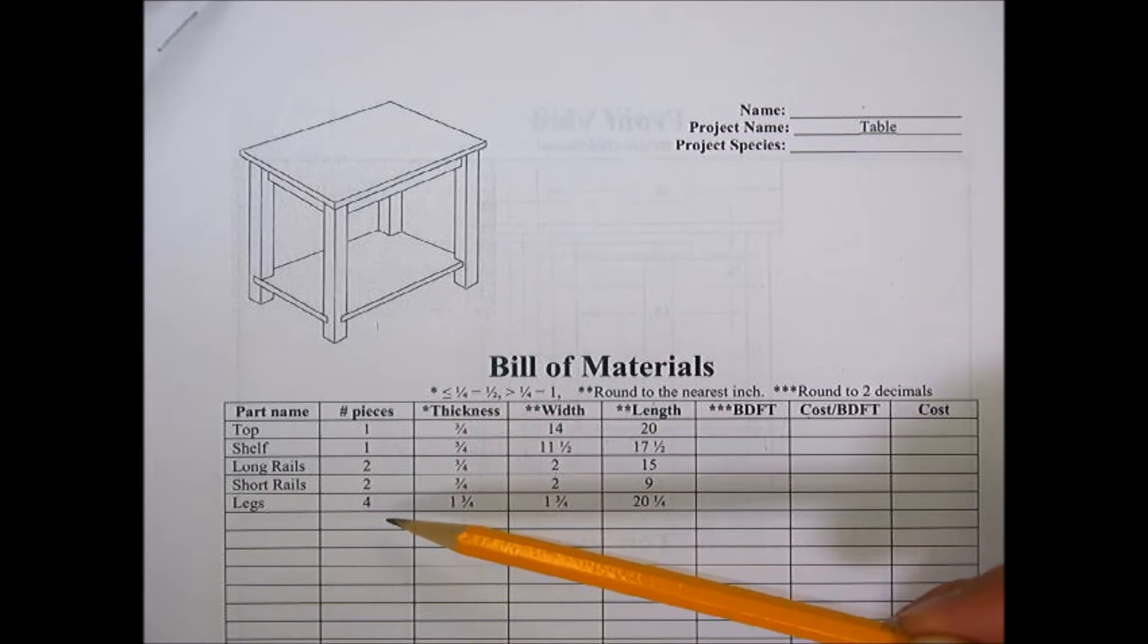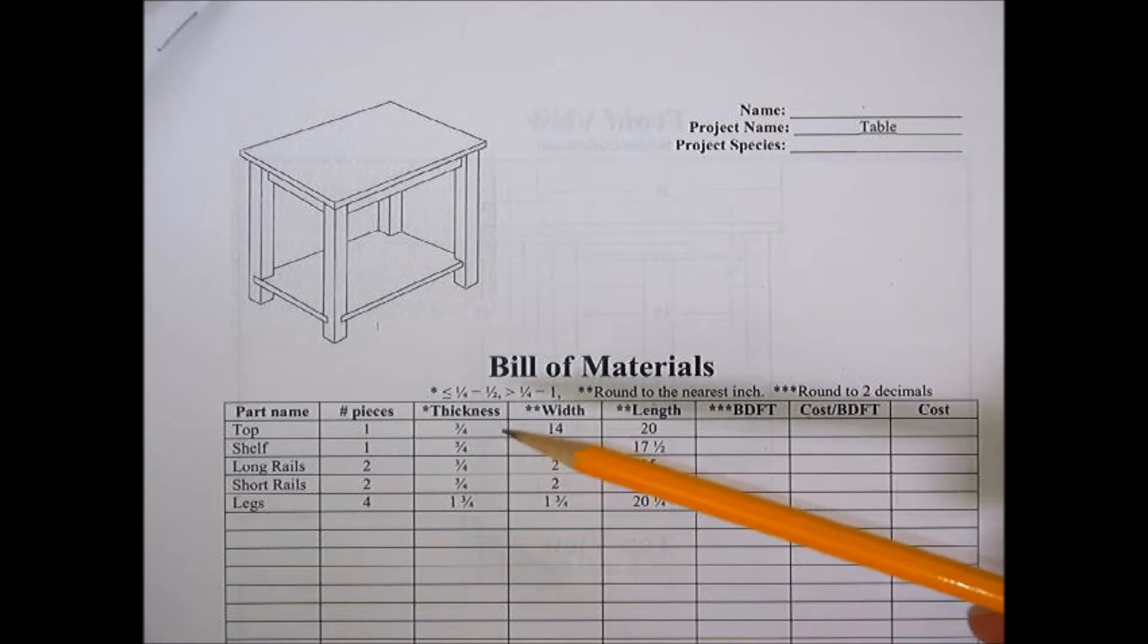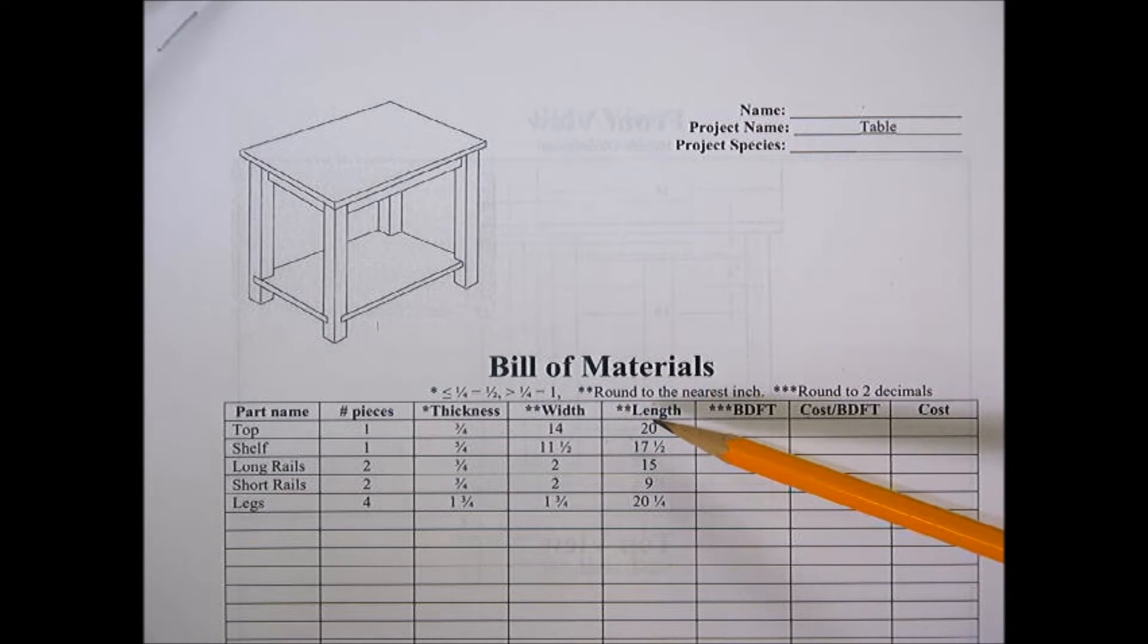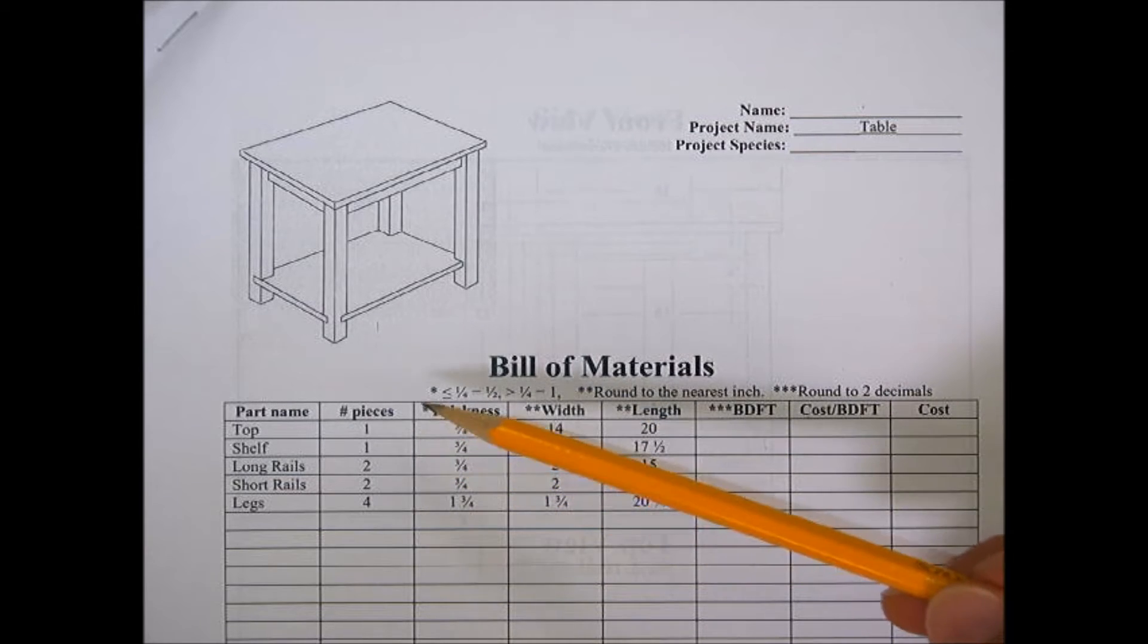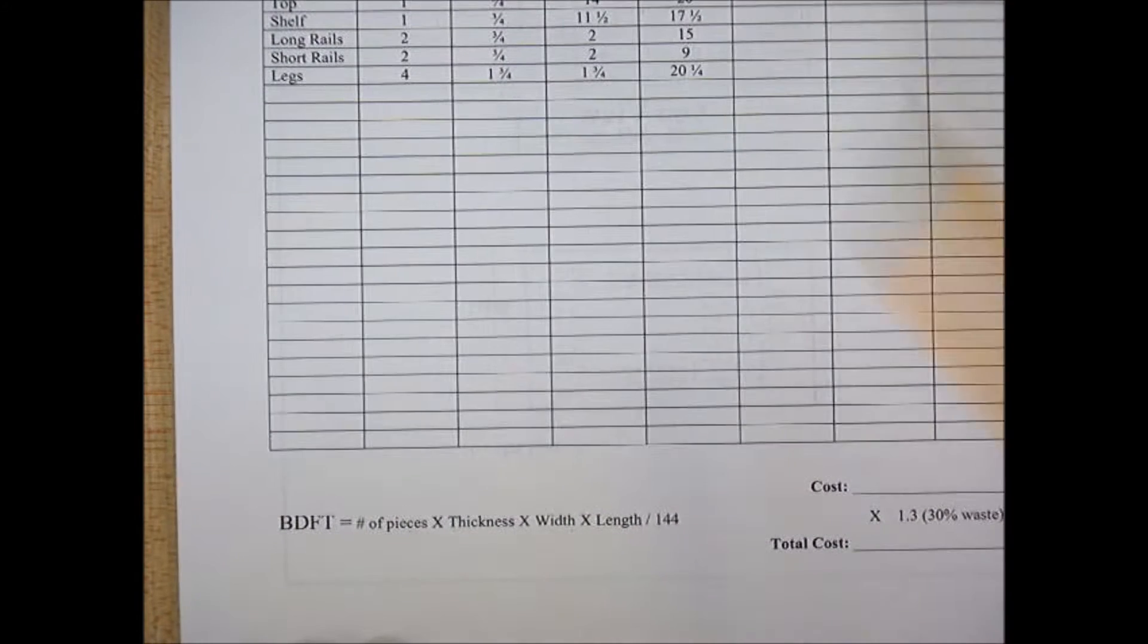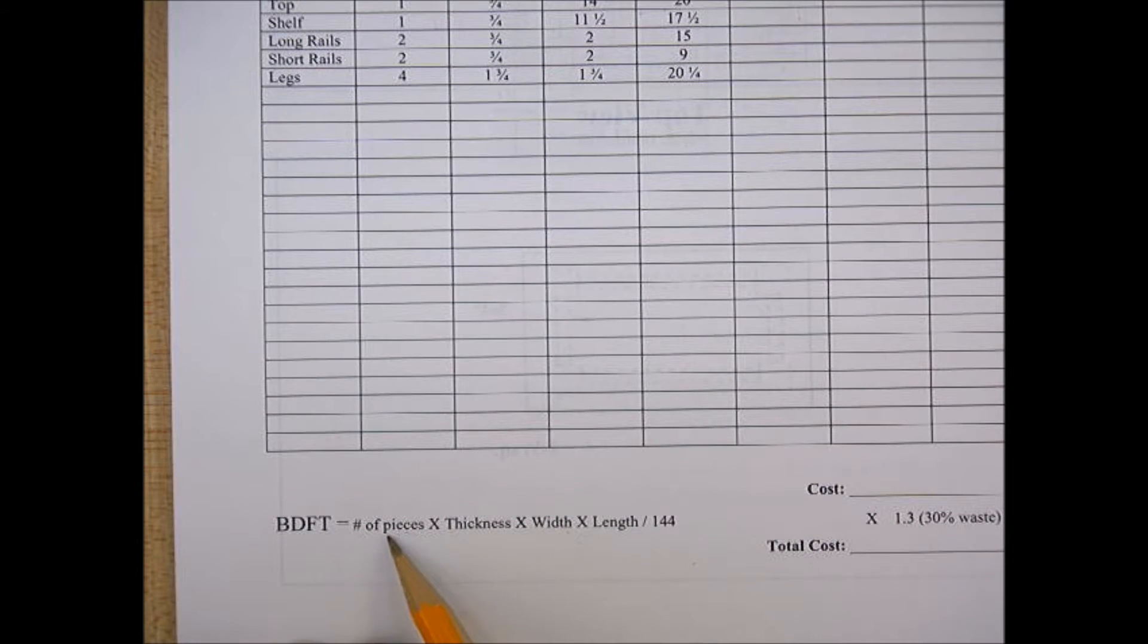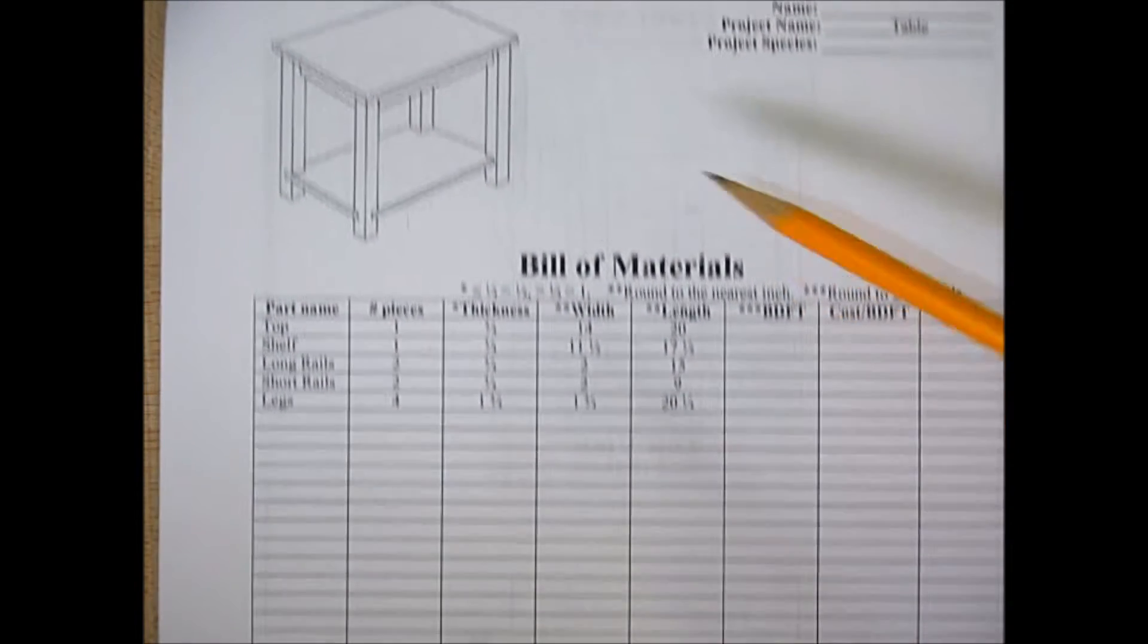how many pieces there are per part, and the thickness, width, and length of each part. The columns match the equation: board feet equals number of pieces times thickness times width times length divided by 144.